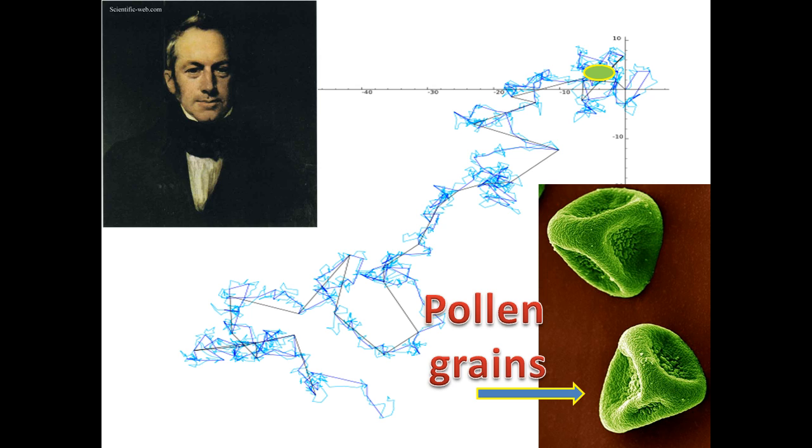Many scientists might have stopped there and concluded that pollen grains move because they were alive. However, Robert Brown was a careful scientist. He used tiny particles of non-living matter to show that these particles moved in a similar way. This motion became known as Brownian motion.